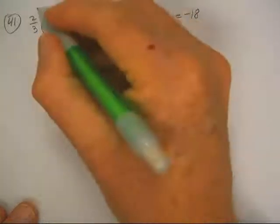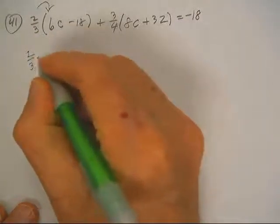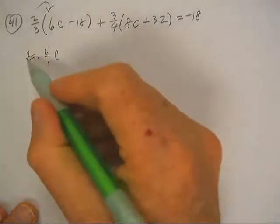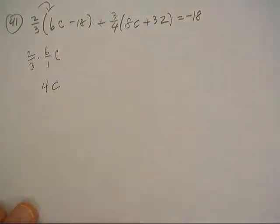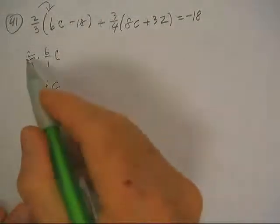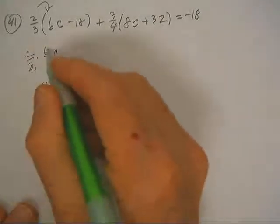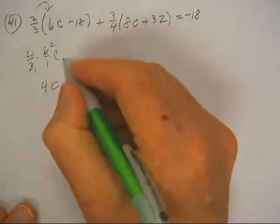Let's write two-thirds times six over one C. And then this is 12 divided by 3, that's really just going to be 4C. You can multiply 12 and divide it by 3, or you could take 3 into 6 twice and 2 times 2 is 4. Either way is okay with me.